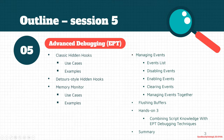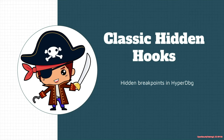Here is a brief outline of what we're going to cover. We'll talk about use cases and examples of classic hidden hooks, detours-style hidden hooks, different memory monitors, and emulating hardware debug registers. We'll also see how to manage events in HyperDBG — event listing, disabling, enabling, clearing — and flushing buffers. Finally we have a hands-on section combining script engine knowledge with EPT debugging techniques.